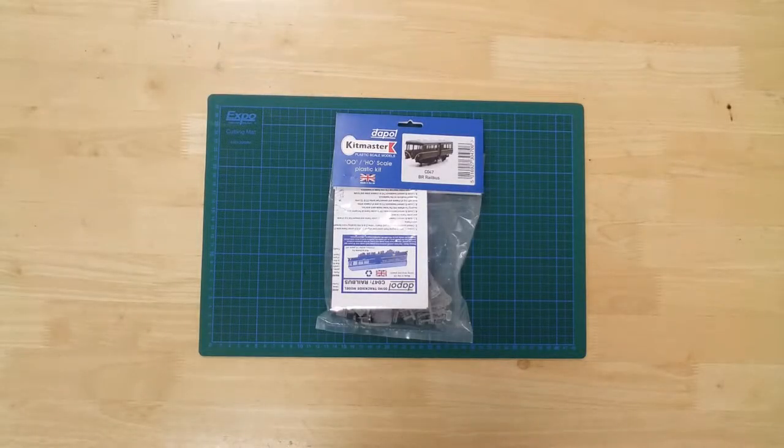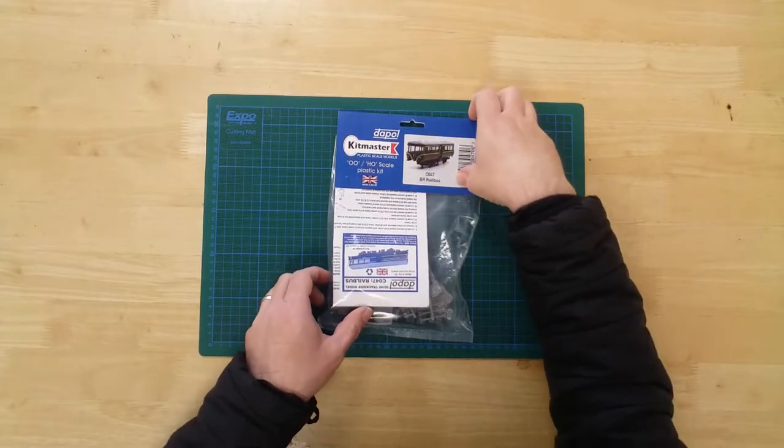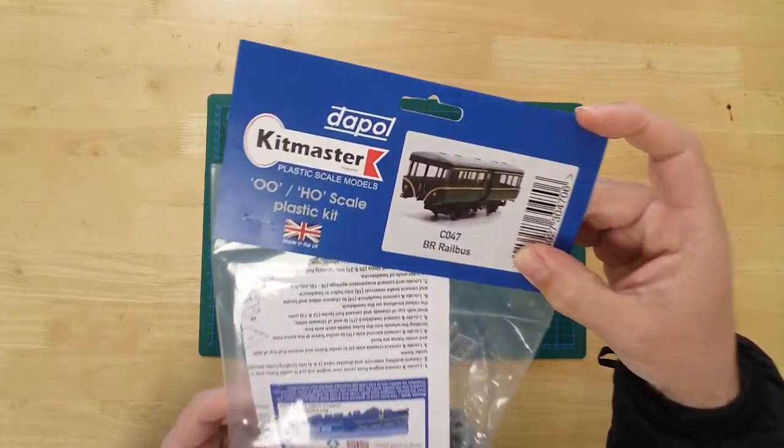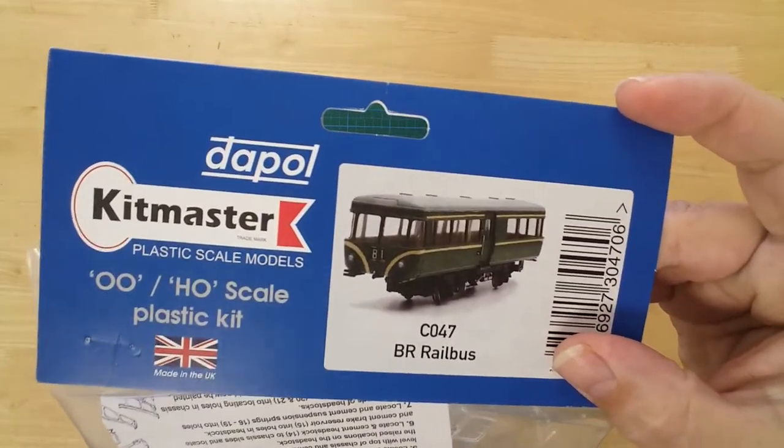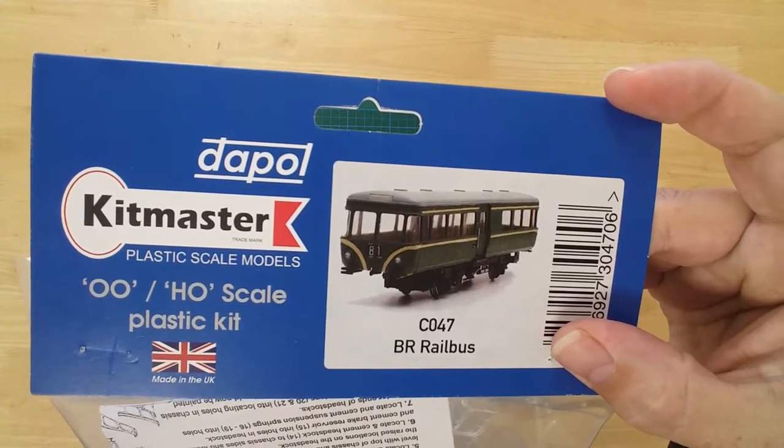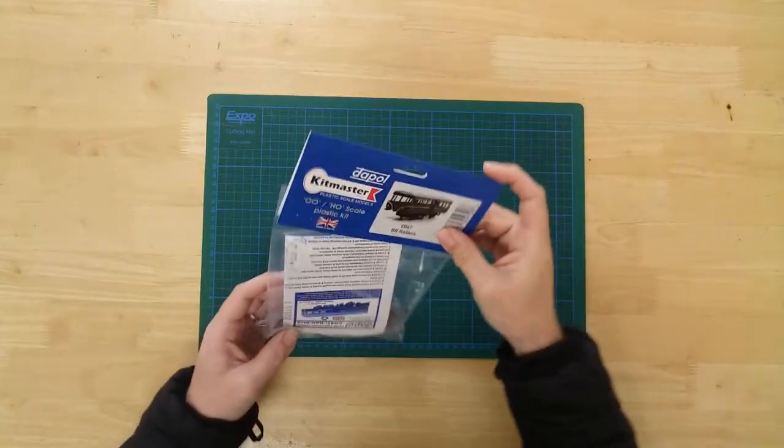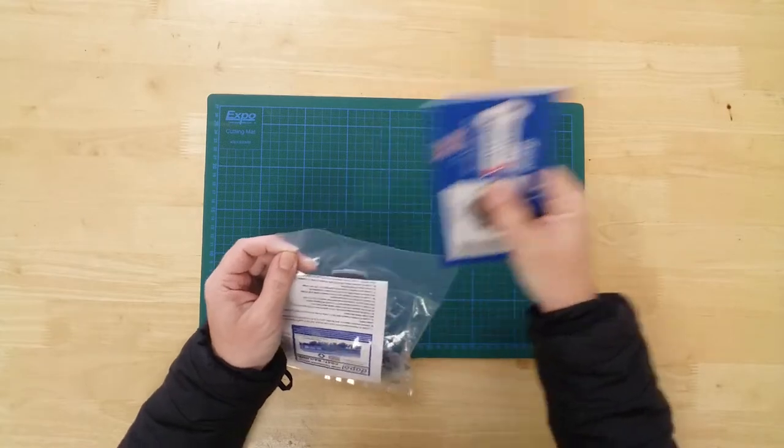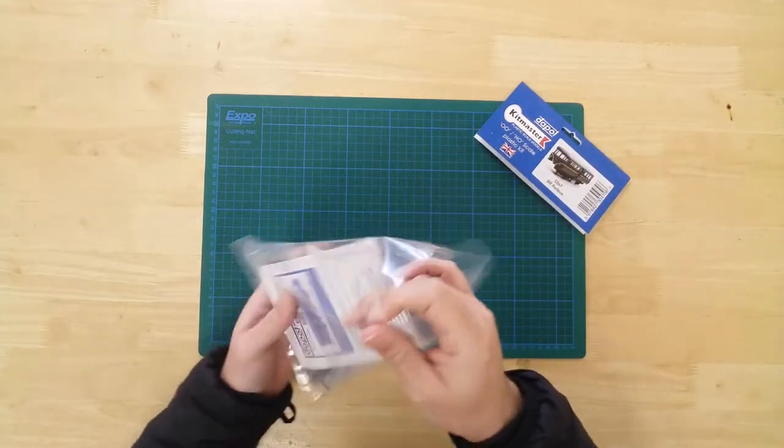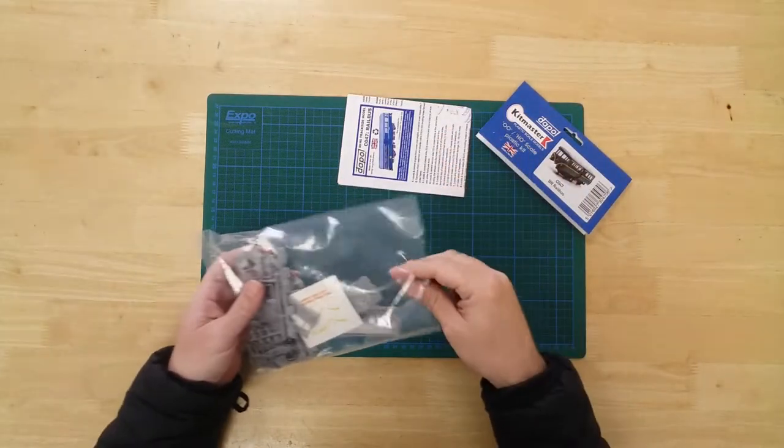This is a non-motorized static model of a British Railways railbus in double-o gauge by DAPOL. It is a plastic kit that requires assembly and painting.